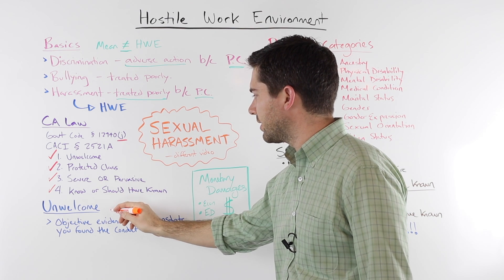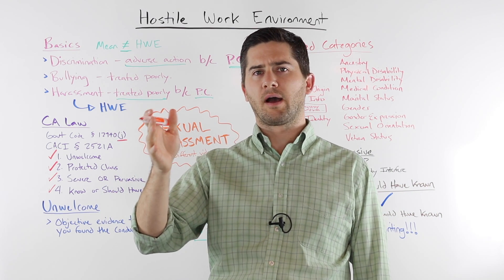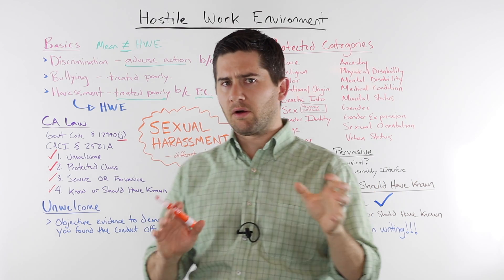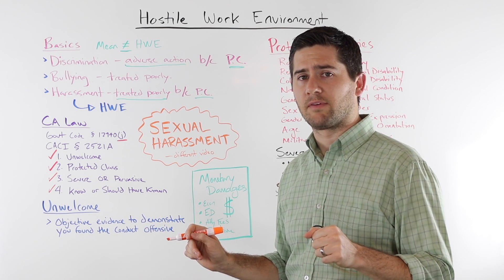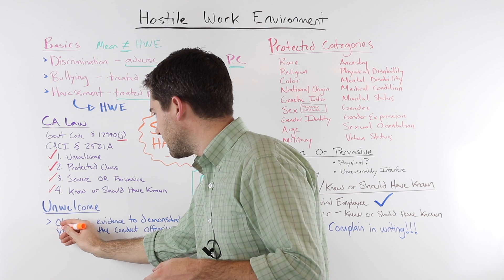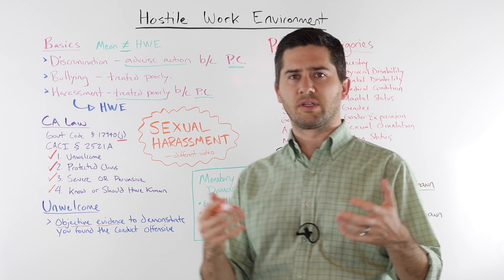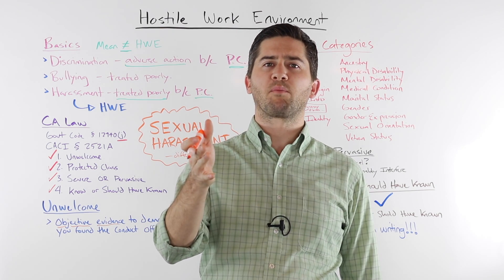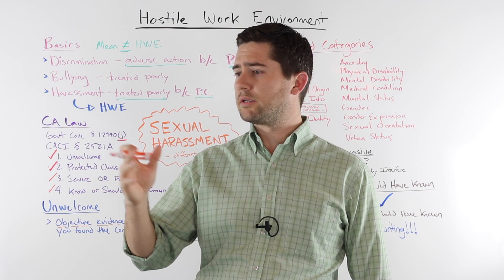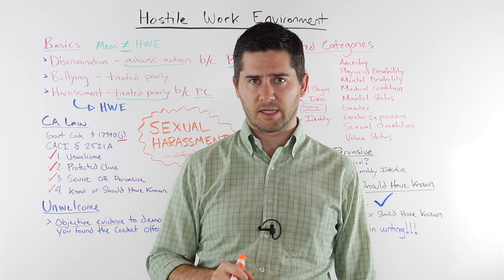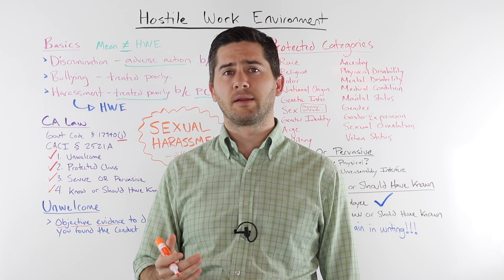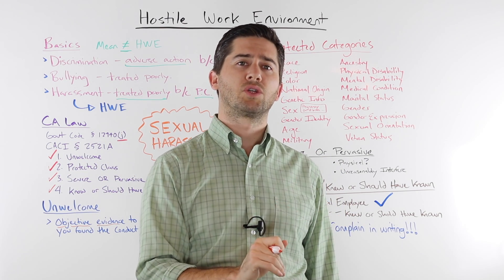Let's unpack the unwelcomeness standard in more detail. One person might hear a comment at work and it'll roll right off their back, yet another person might hear that exact same comment and be devastated. So one of the essential elements is that you found the conduct or comments to be offensive and unwelcome. The best way to show that is with objective evidence — like a written complaint to HR, a manager, or the president of the company. You can also show objective evidence if co-workers witnessed the harassment, saw you crying afterwards, or you complained to them about it.